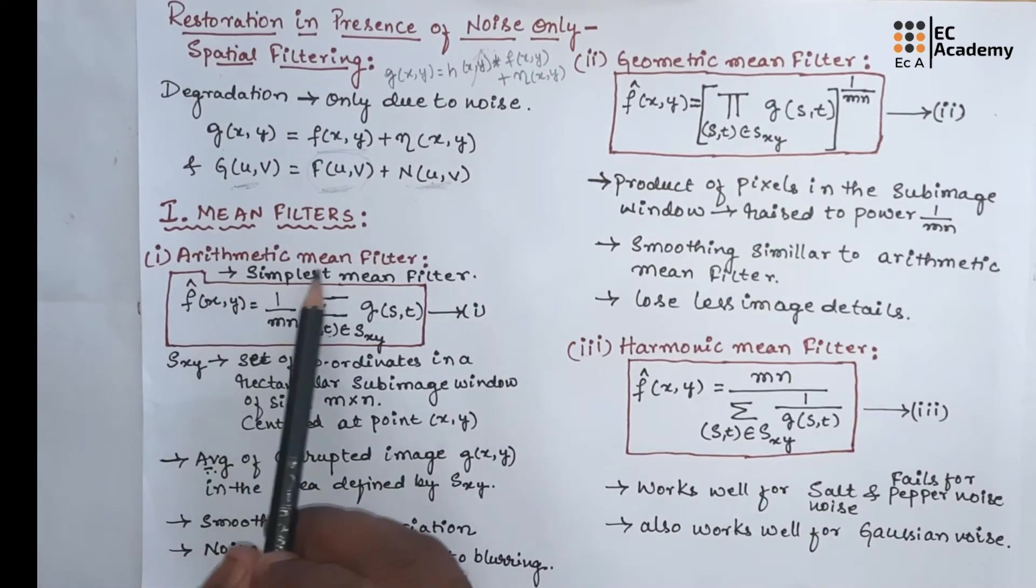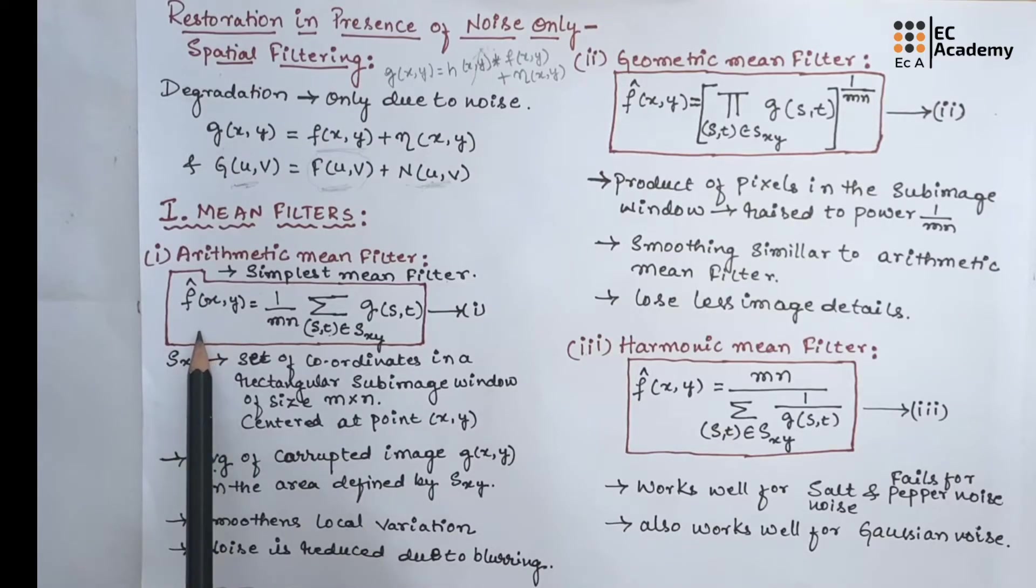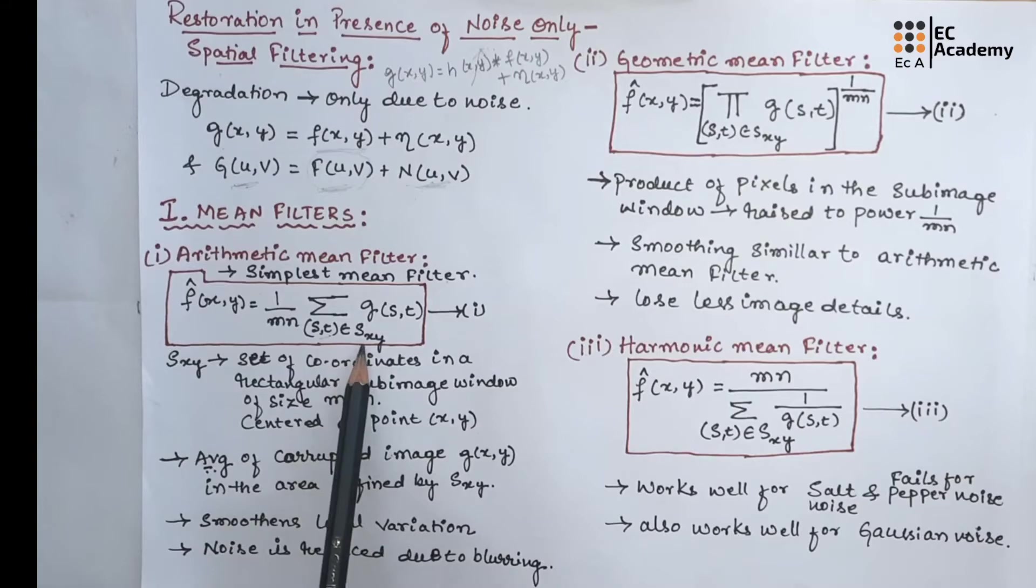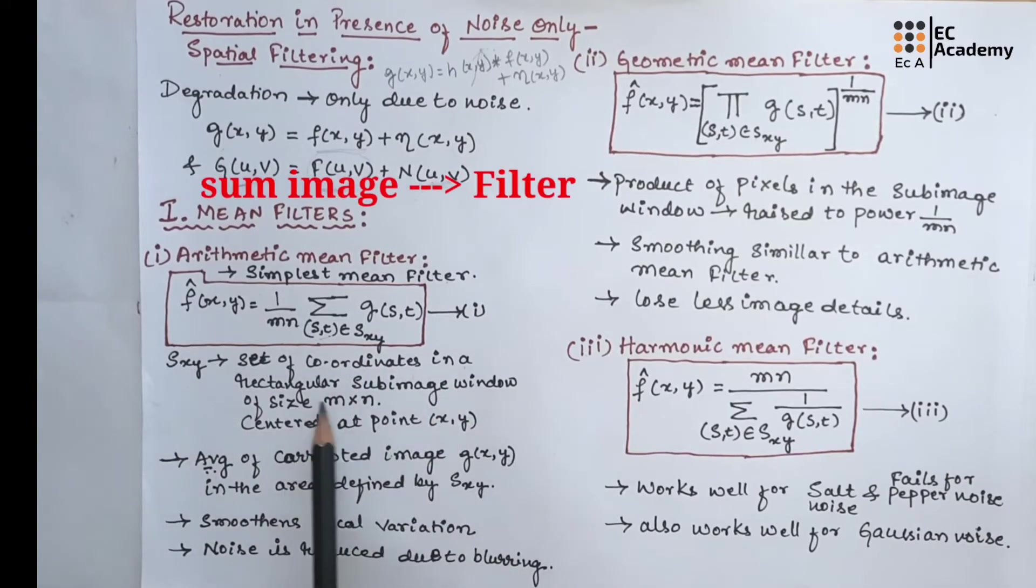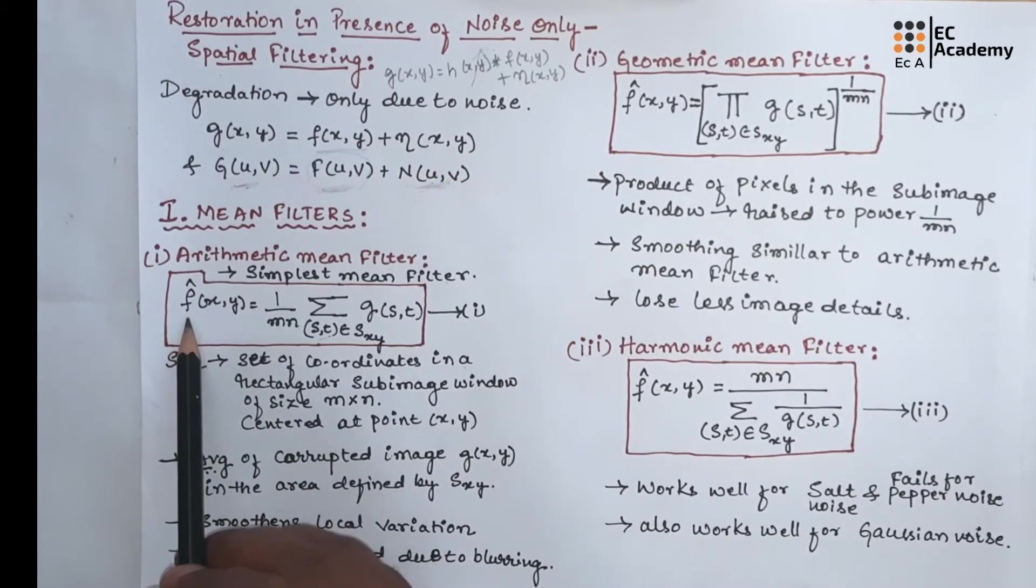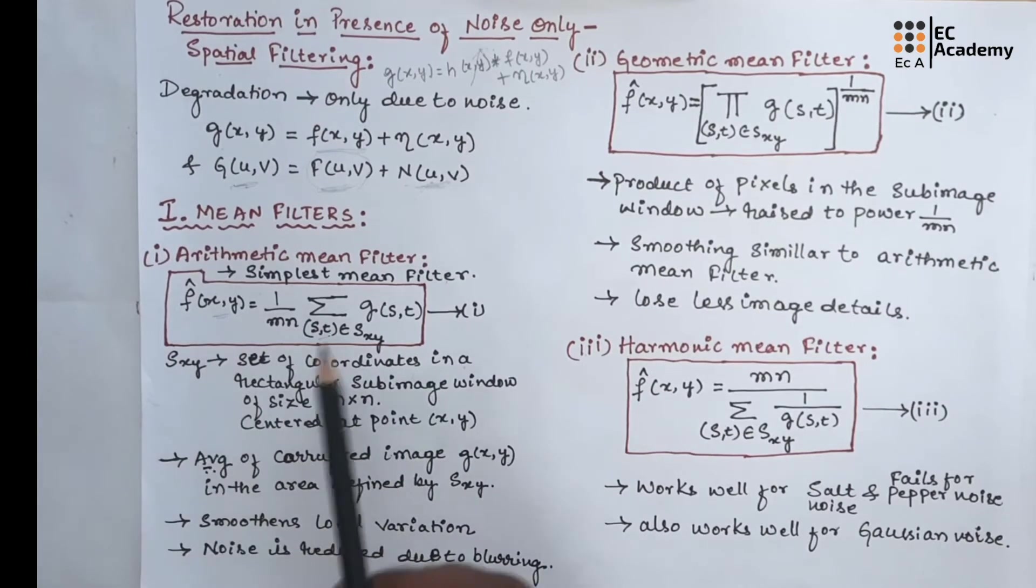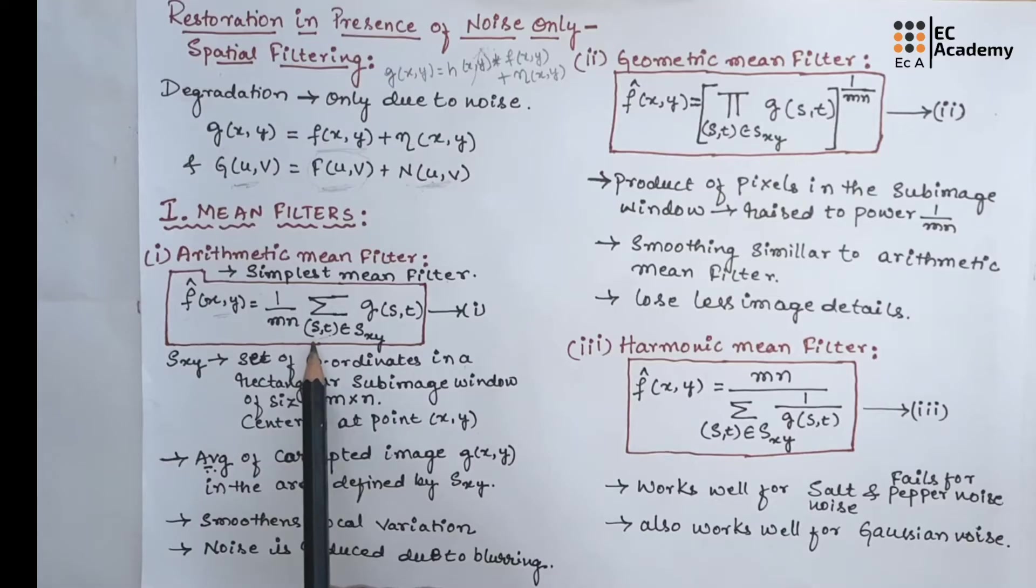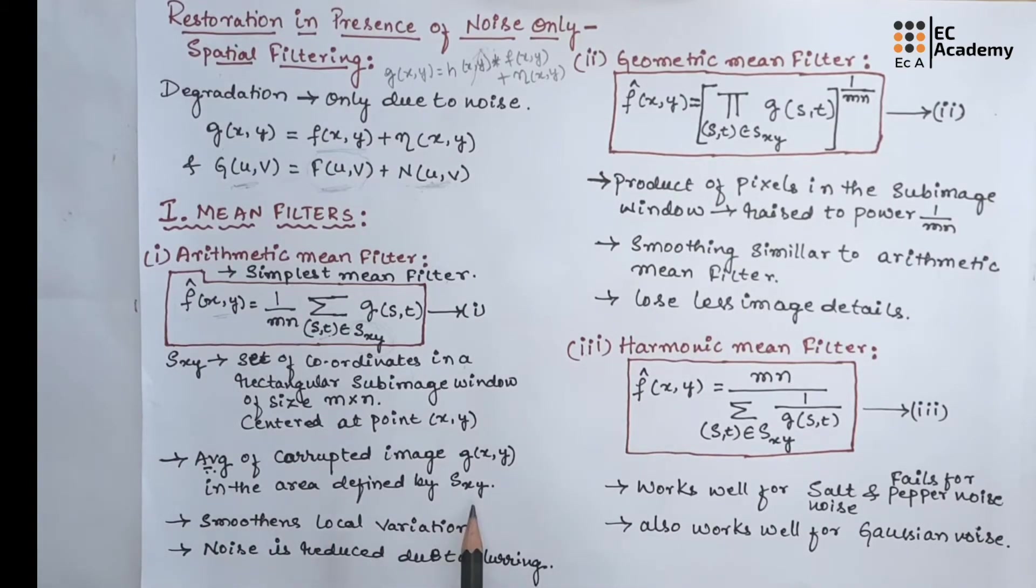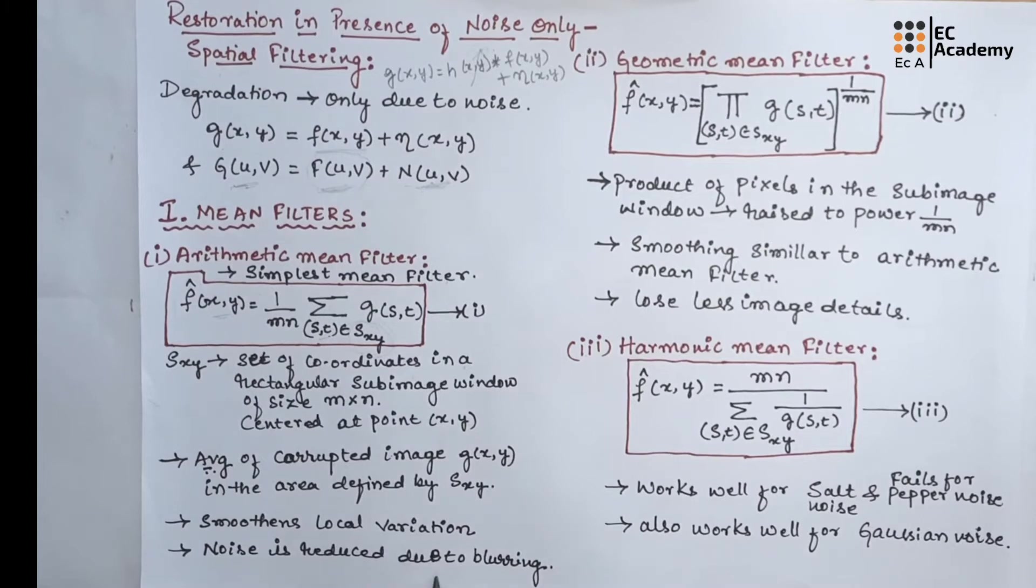The first type of mean filter is arithmetic mean filter. The operation of this filter can be given as F(x,y) = 1/(m×N) summation of G(s,t). Here, s,t should belong to Sxy. Sxy is set of coordinates in rectangular subimage of window size m×N which is centered at the point x,y. The value of restored image F at any point x,y is simply the arithmetic mean that is computed using the pixels in the region that is defined by Sxy. The arithmetic mean filter process the average value of corrupted image G(x,y) in the area that is defined by Sxy. A mean filter simply smoothens the local variations in the image. If you apply arithmetic mean filter, noise is reduced as a result of blurring.